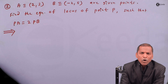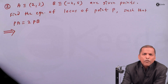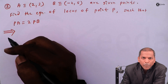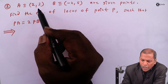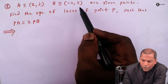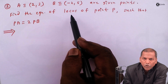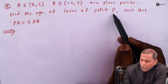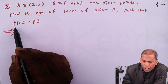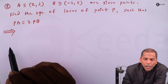Hello friend, now we see problem 2, which is also based on equation of locus from the chapter on locus. The problem states: A is equivalent to (2, 3), B is equivalent to (-2, 5) are given points. Find the equation of locus of point P such that PA equals 2 times PB. Now let's see the solution.